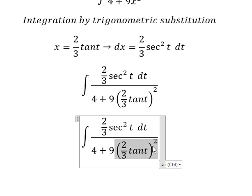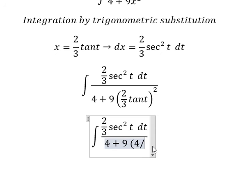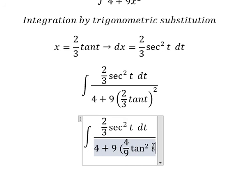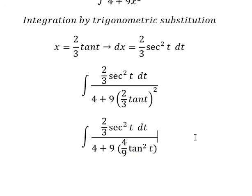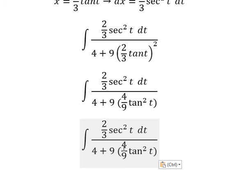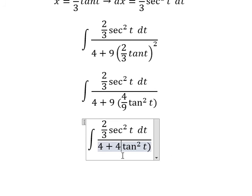This one, we have 4 over 9 times tan² t. Number 9, number 9 cancel. So we have number 4.